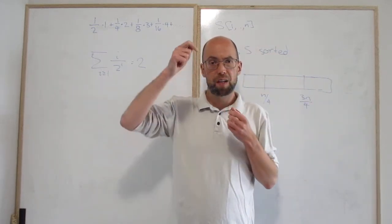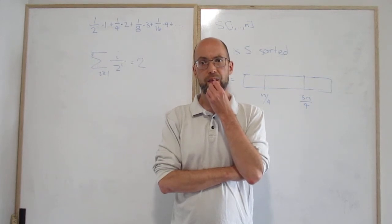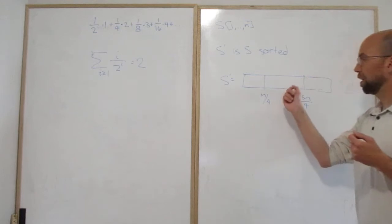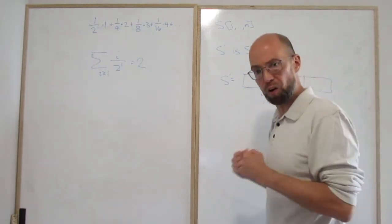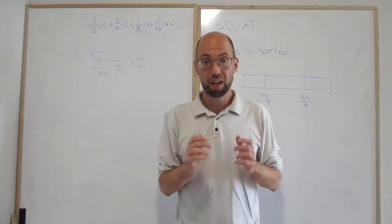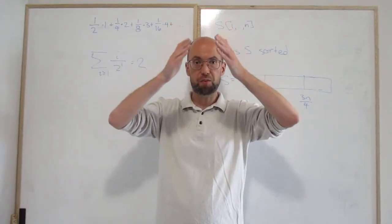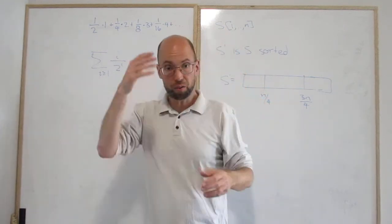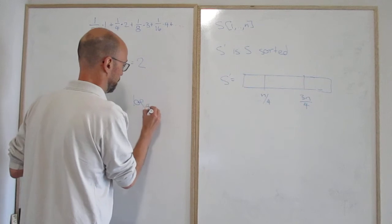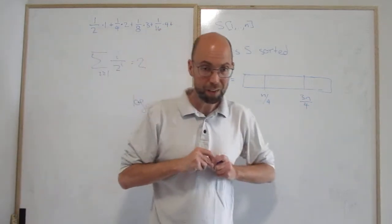What is the height of the tree? We keep re-choosing pivots until we get one in the middle half, which means neither partition is greater than three-quarters. So if you take n, then three-quarters n, then nine-sixteenths n, and continue down — how far can you go before you get down to one? You'll get log base four-thirds of n. So the height of your tree is logarithmic.